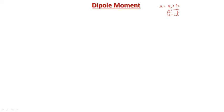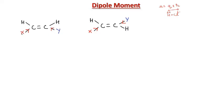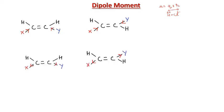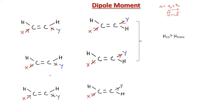I have drawn these two isomers, cis and trans. Suppose substituent groups X and Y are of the same nature — both electron-donating or both electron-withdrawing. In that case, the dipole moment of the cis compound will be greater than the dipole moment of the trans compound. However, if X and Y are of different nature — one electron-donating and the other electron-withdrawing — then μ(trans) is greater than μ(cis).